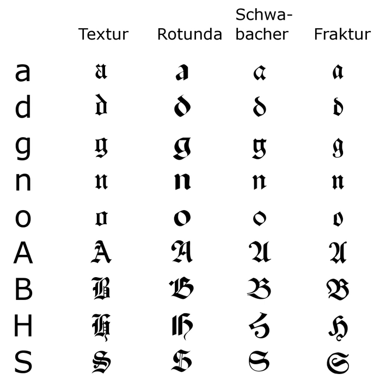The Fraktur typefaces remained in use in Nazi Germany, when they were initially represented as true German script. Official Nazi documents and letterheads employed the font, and the cover of Hitler's Mein Kampf used a hand-drawn version of it. However, more modernized fonts of the grotesque type such as Tannenberg were in fact the most popular typefaces in Nazi Germany, especially for running text as opposed to decorative uses such as in titles.